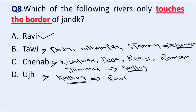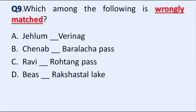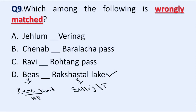Our next question is: which among the following is wrongly matched? Option A: Jhelum–Verinag, B: Chenab–Baralacha Pass, C: Ravi–Rohtang Pass, D: Beas–Rakshastal Lake. Correct answer is Option D. Beas and Rakshastal Lake are wrongly matched. Source of Beas lies on Beas Kund in Himachal Pradesh, and Rakshastal Lake is the source of River Sutlej in Tibet. Source of Jhelum is Verinag in Anantnag district, source of Chenab is Baralacha Pass, and source of Ravi is Rohtang Pass — all in Himachal Pradesh.